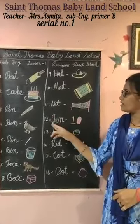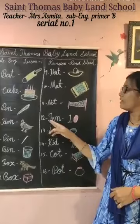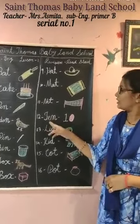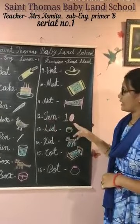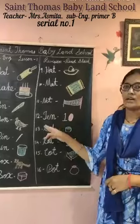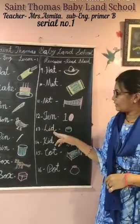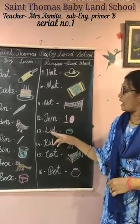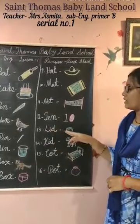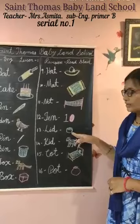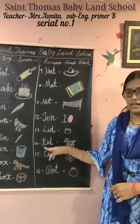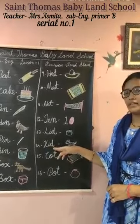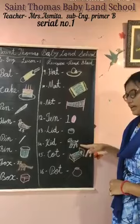The next is ten. T, E, N — ten. Lead. L, I, D — lead. Kid. K, I, D — kid.